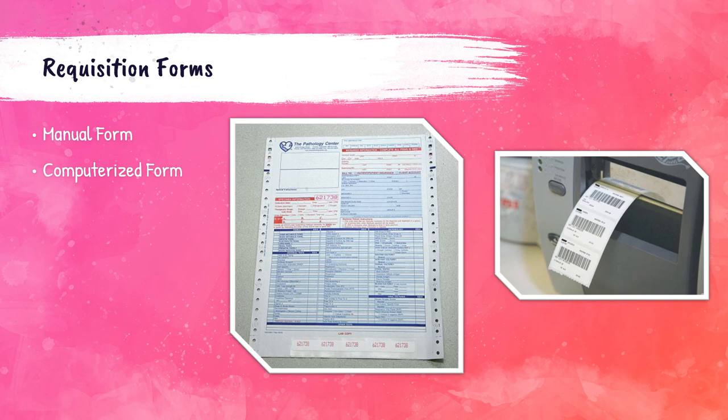Handwritten forms are not ideal, as bad handwriting and misspellings of test names can lead to the wrong test being collected and potentially delay patient care. Labels are sometimes printed and taken with the phlebotomist, but many facilities have portable label printers that can scan the patient's ID band and print labels at the bedside. Always correctly match the order to the patient's ID.